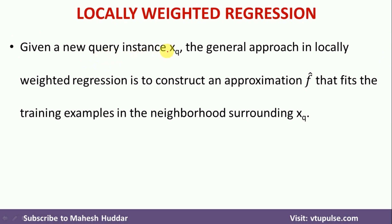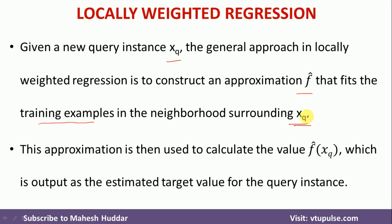Given a new query instance xq, the general approach in locally weighted regression is to construct an approximation function f̂ that fits the training examples in the neighborhood surrounding xq. This approximation is then used to calculate the value for the new instance xq, which can be calculated using f̂(xq).